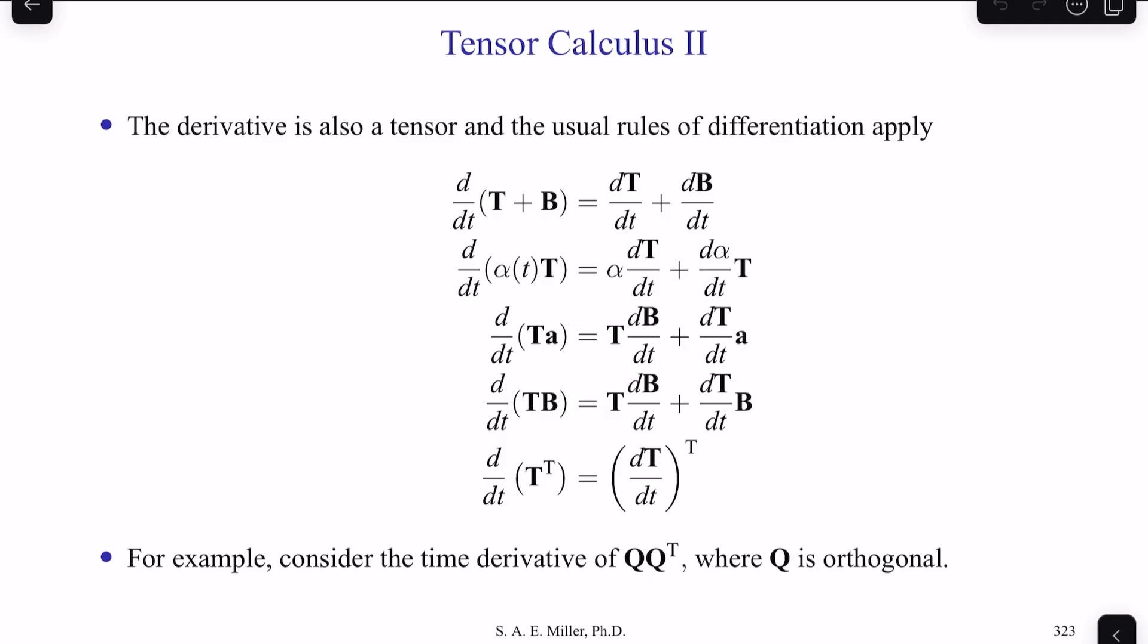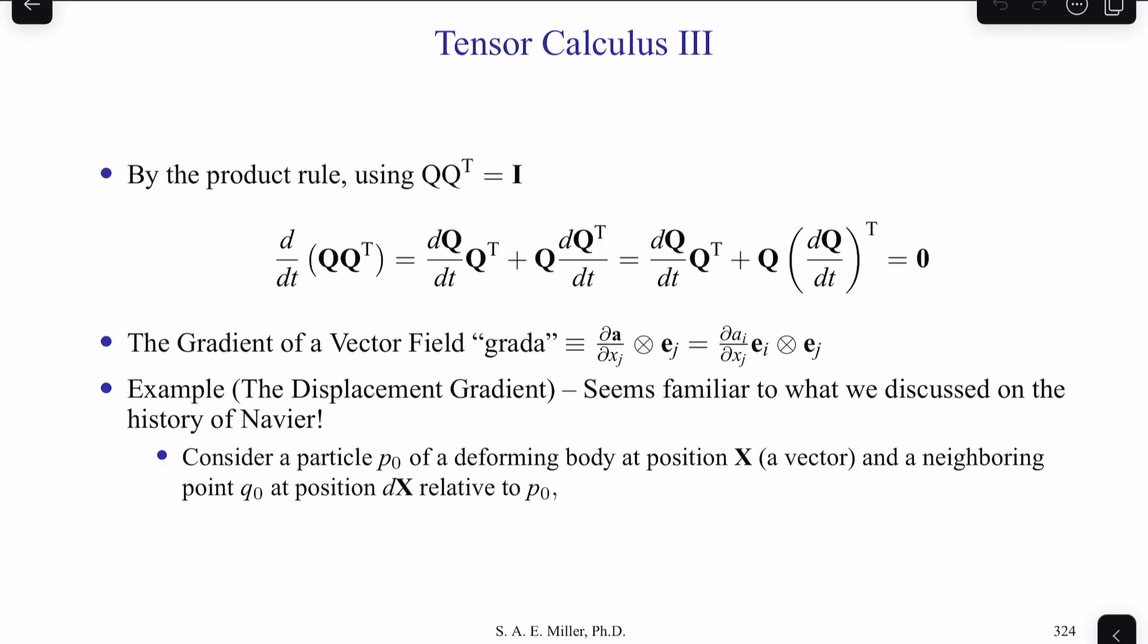For example, consider the time derivative of QQ^T, where Q is orthogonal. Using the product rule and noting QQ^T is the identity, we can write d/dt(QQ^T) = dQ/dt Q^T + Q d/dt(Q^T), which equals dQ/dt Q^T + Q(dQ/dt)^T, which equals zero.